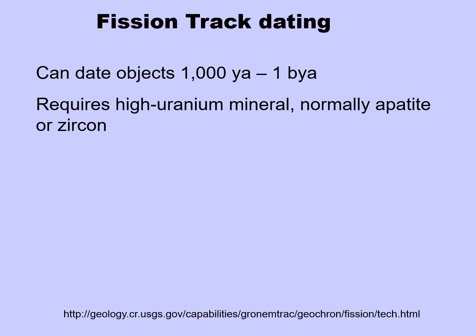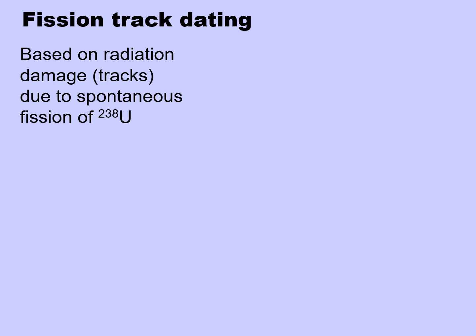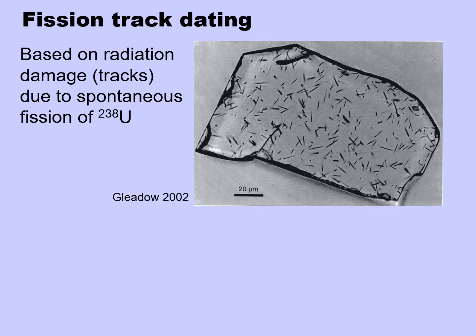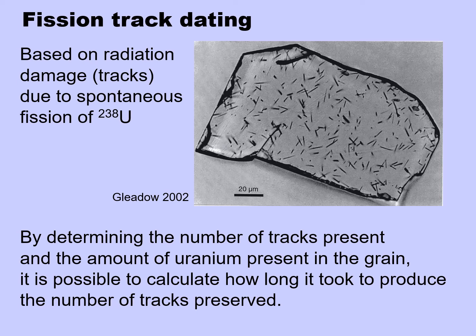A third type of absolute dating good for fossil human sites is fission track dating. This can date objects between 1,000 years old and 1 billion years old. It requires a high uranium mineral, normally apatite or zircon. It's based on the radiation damage — the tracks — due to spontaneous fission of uranium-238. By determining the number of tracks present and the amount of uranium present in the grain, it is possible to calculate how long it took to produce the number of tracks preserved.